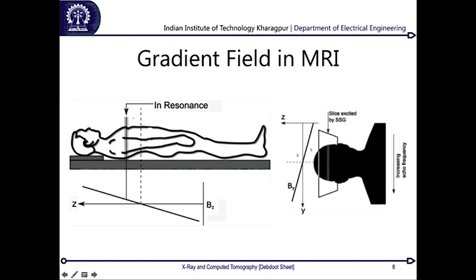For x-y discrimination within each slice, the same gradient trick is applied along the y-direction after the z-direction gradient creates slices. For x-direction discrimination, instead of sending the reset pulse directly at 180 degrees, it is sent at different phase angles, creating a phase-based separation along the x-direction. Combining a frequency filter and a phase filter together enables discrimination in 2D space, giving voxel-level resolution across the whole volume of the body for 3D MRI imaging.